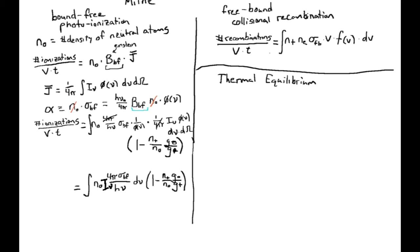We also assume detailed balance, which holds in thermal equilibrium. Detailed balance means that rather than dealing with total integral rates, we can relate any forward reaction to its reverse reaction at each differential interval. This lets us drop all integral signs and say: at each frequency interval, the number of ionizations must match the number of recombinations over the corresponding velocity interval.